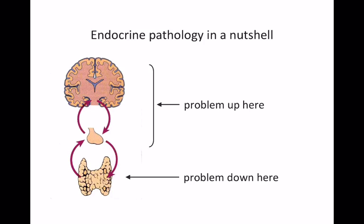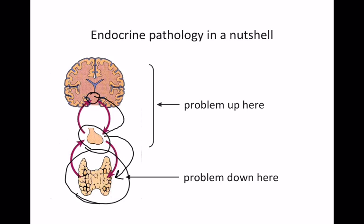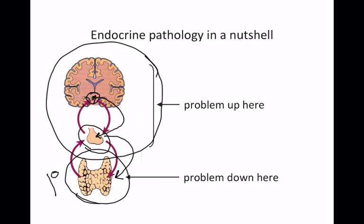The endocrine system has multiple levels of control. You've got the end organ — the thyroid gland, for example — controlled by the pituitary gland, which secretes hormones that stimulate or inhibit hormone release from the end organ. The pituitary in turn is controlled by the hypothalamus, with its own stimulating and inhibiting hormones. If someone has too little thyroid hormone, the problem could be in the end organ itself — called primary disease — in the pituitary (secondary disease), or rarely in the hypothalamus (tertiary disease).